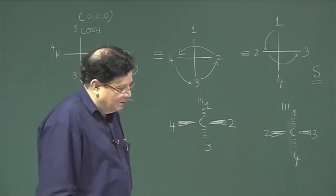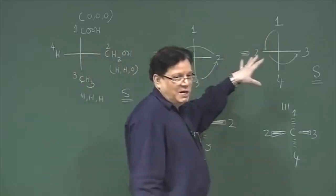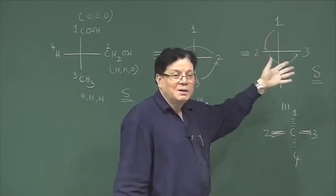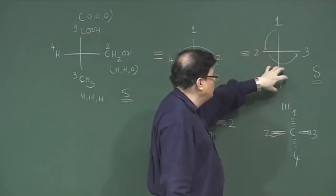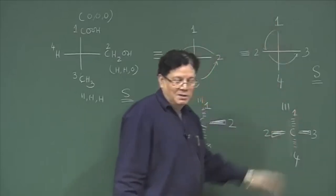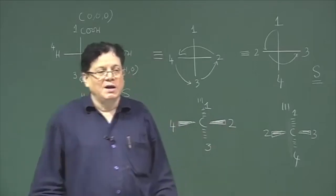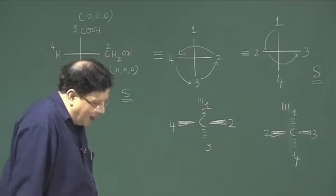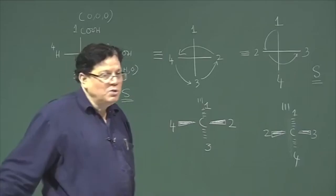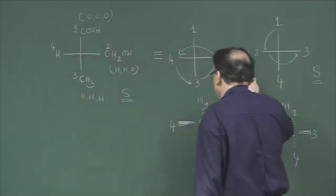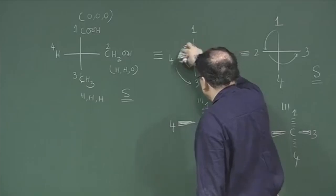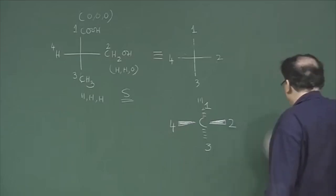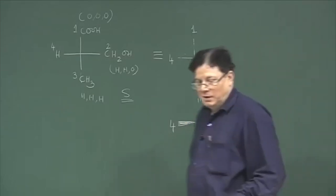Some people avoid this exchange. This is what is called a very good rule: if the fourth group is not occupying the vertical position, bring it to the vertical position, and then whatever you see gives you the R or S configuration. The other way to do it is to make no changes at all — just keep whatever is there. In our structure, the fourth group is occupying a direction which is towards the observer.